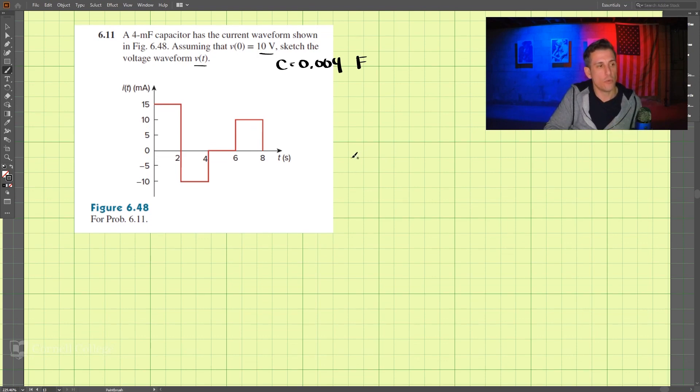So I think what we need to remember is the voltage waveform is equal to 1 divided by the capacitance, and we integrate from the initial time to another time, i dt, plus our voltage at time 0.